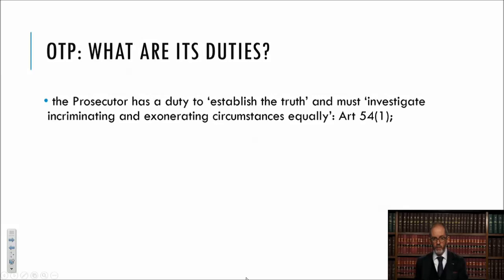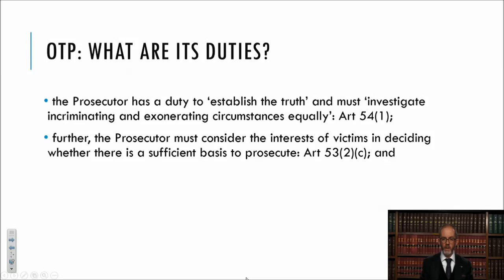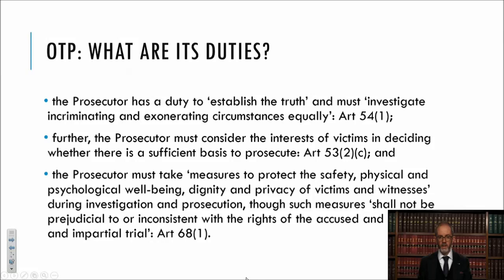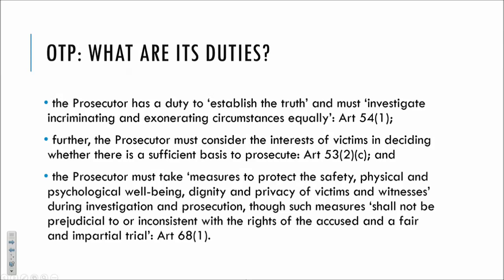What are the prosecutor's duties? The prosecutor has an overriding duty to establish the truth — not secure convictions — and therefore must investigate incriminating and exonerating circumstances equally and make that evidence available to defence counsel. Further, the prosecutor must consider the interests of victims in deciding whether there is a sufficient basis to prosecute, and must take measures to protect the safety, physical and psychological wellbeing, dignity and privacy of victims and witnesses during investigations and prosecution, though such measures shall not be prejudicial to or inconsistent with the rights of the accused in a fair and impartial trial under Article 68. That is a difficult collection of duties to balance — the prosecutor must take into account the interests of victims and witnesses but cannot prejudice the rights of the accused and must uphold a fair and impartial trial.